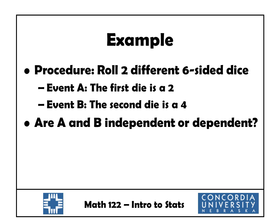Let's look at some examples of identifying independent and dependent events. Consider this procedure: we roll two different six-sided dice. Let event A be the event that the first die is a 2, and event B be the event that the second die is a 4. Are they independent or dependent? Well, we have to ask ourselves, does the occurrence of one event affect the probability of the other? They're two different dice — one doesn't affect the other, so they would be independent. There's no connection between the two.